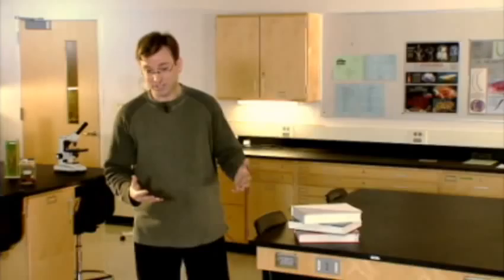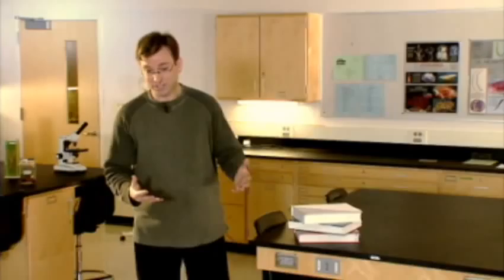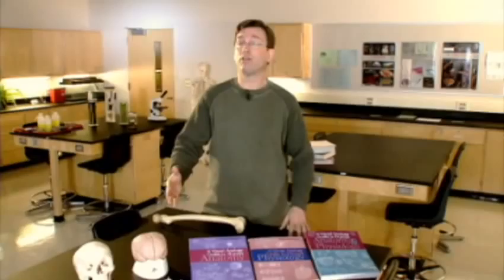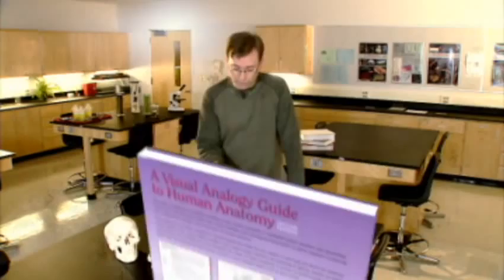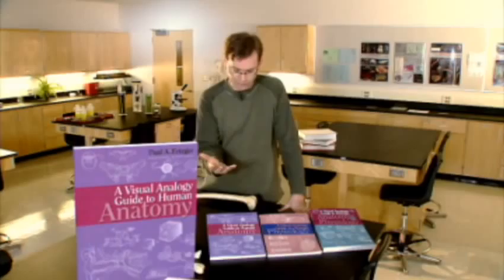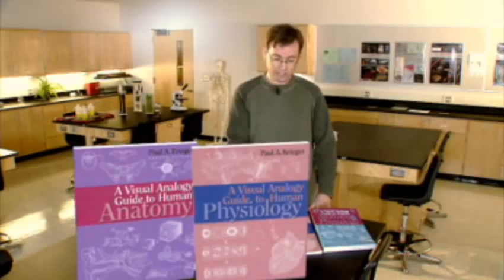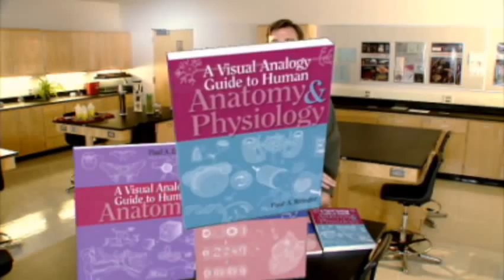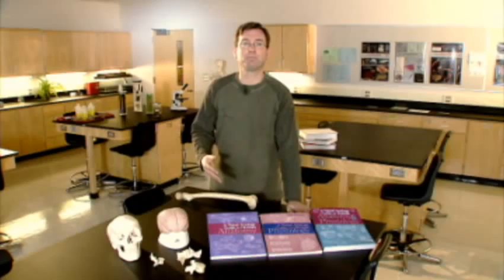So I came up with a little solution — to create my own book series called the Visual Analogy Guide series, consisting of three books. The first is a Visual Analogy Guide to Human Anatomy, covering structure. The second was a Visual Analogy Guide to Human Physiology, covering function. And the third was a Visual Analogy Guide to Human Anatomy and Physiology, integrating the first two books. Let's look at a few examples to see what we did to make things simpler and more memorable for students.